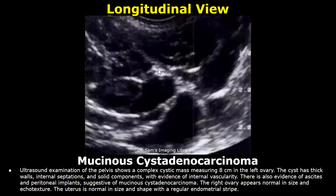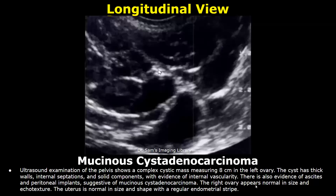These are the findings for mucinous cystadenocarcinoma. There is a complex cystic mass measuring 8 cm in the left ovary. The cyst has thick walls, internal septations, and solid components with evidence of internal vascularity. There is also evidence of ascites and peritoneal implants suggestive of mucinous cystadenocarcinoma. Then the appearance of the right ovary, the uterus, and the endometrium are written.